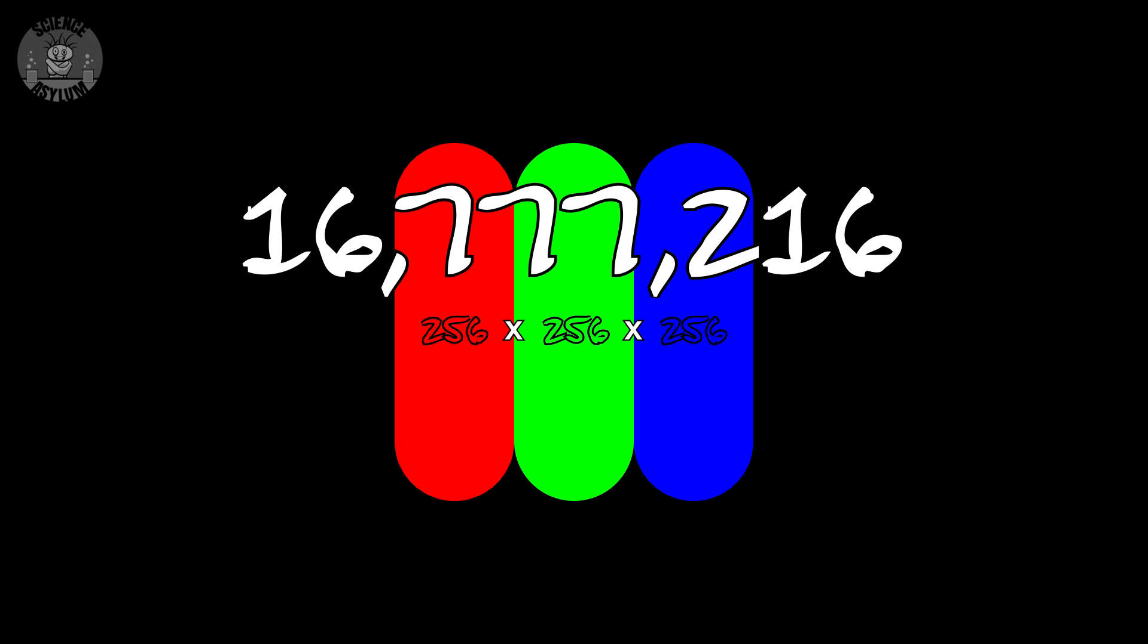If each color in a pixel has 256 different brightness levels, the screen has a total of 16,777,216 different colors it can display, which is well over the 10 million or so colors we can see.